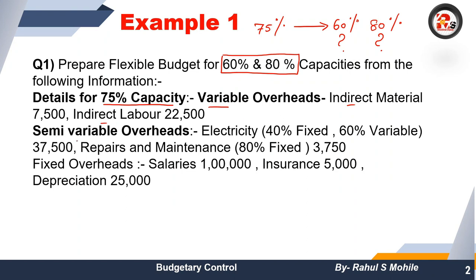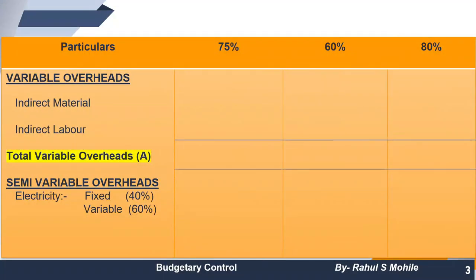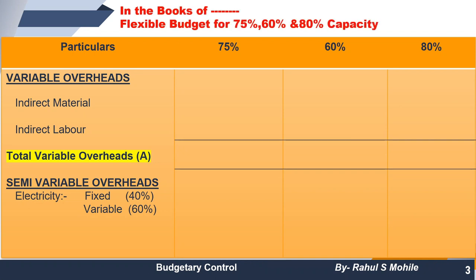We have variable overheads given such as indirect material and indirect labor. Semi-variable overheads — semi-variable means partly fixed and partly variable. Specifically, electricity has 40% fixed and 60% variable. Repairs and maintenance has 80% fixed, so 20% variable. And fixed overheads given are salaries, insurance, and depreciation of 25,000.